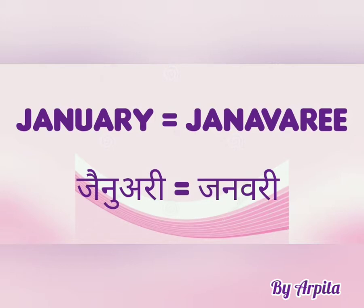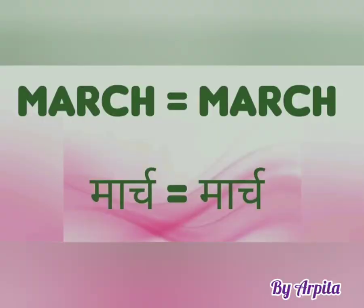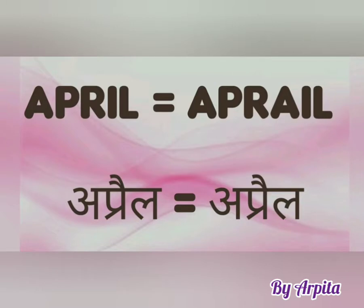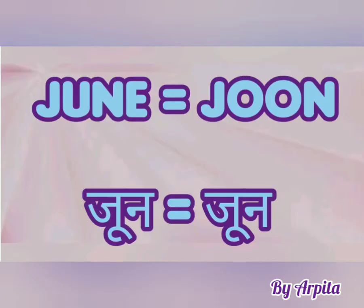January is called as January. February is called as February. March is called as March. April is called as April. May is called as May. June is called as June.